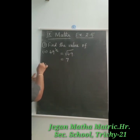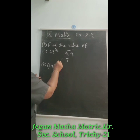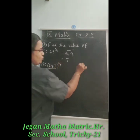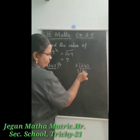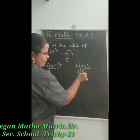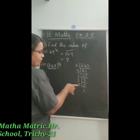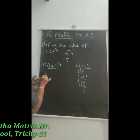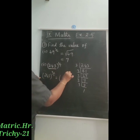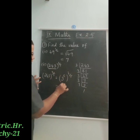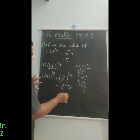The second question is 243 the whole power 2 by 5. First we factorize 243: dividing by 3 repeatedly gives 81, 27, 9, 3, 1 — so 243 equals 3 power 5. Therefore 243 the whole power 2 by 5 equals 3 power 5, the whole power 2 by 5, which equals 3 power 5 into 2 by 5. The 5 and 5 cancel, giving 3 power 2, which equals 3 squared. So the answer is 9.